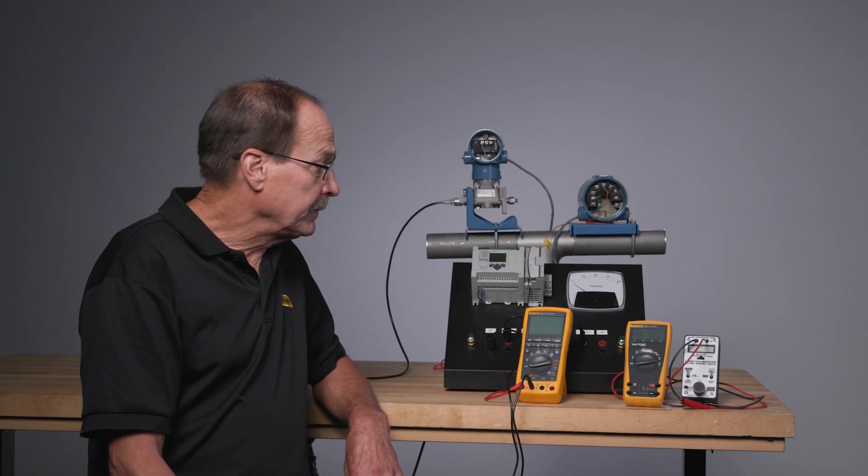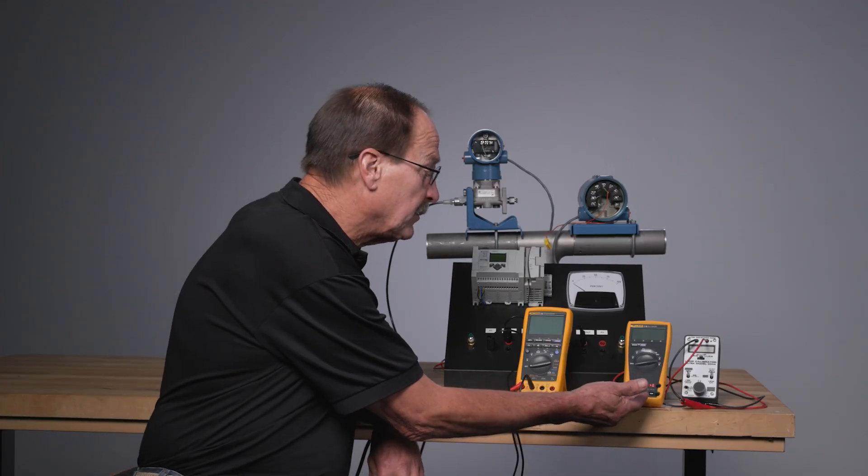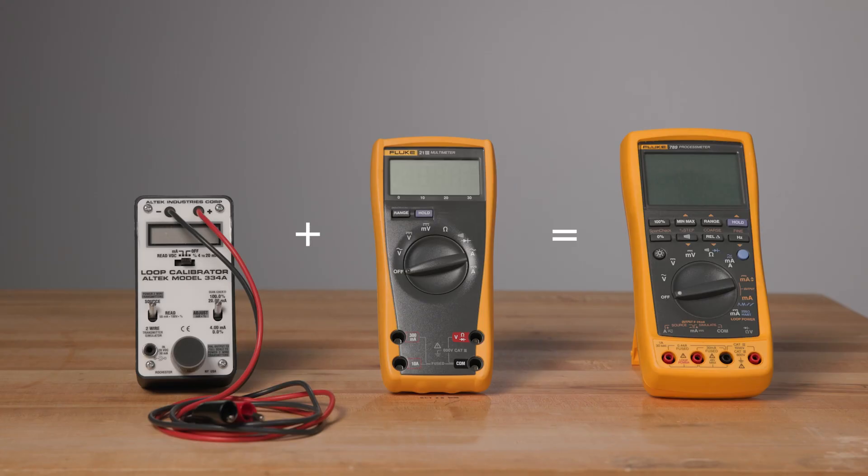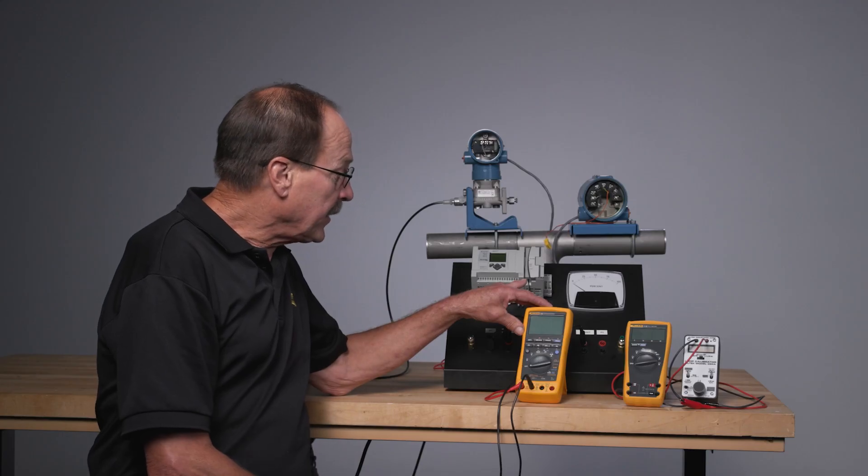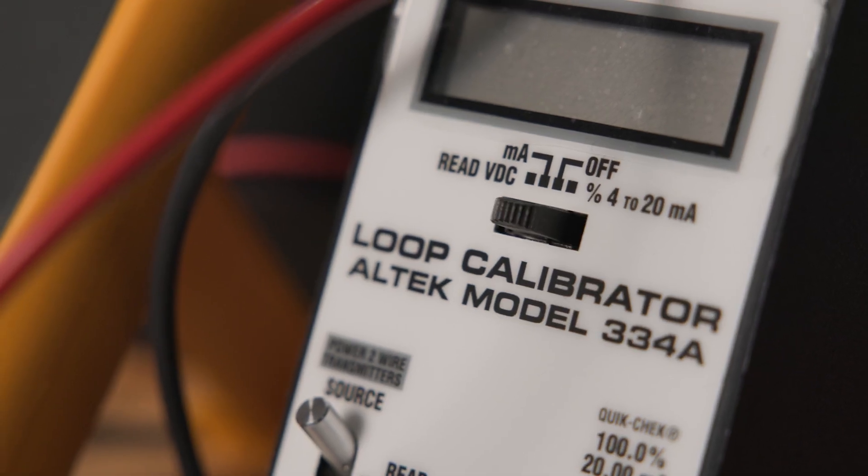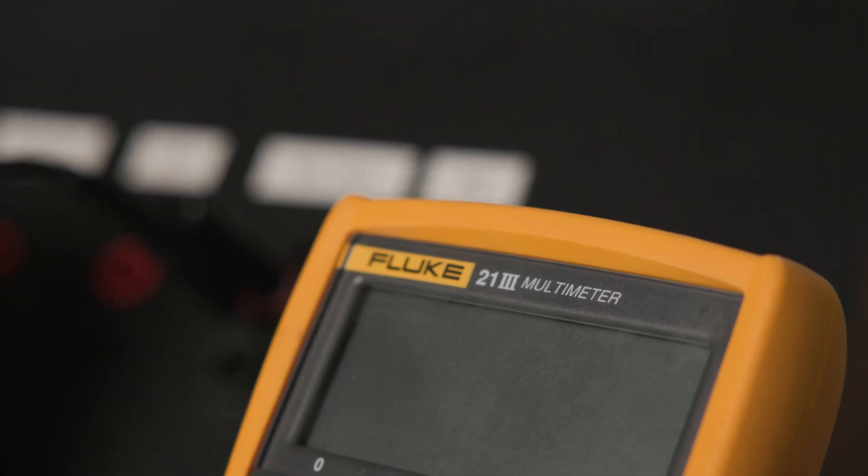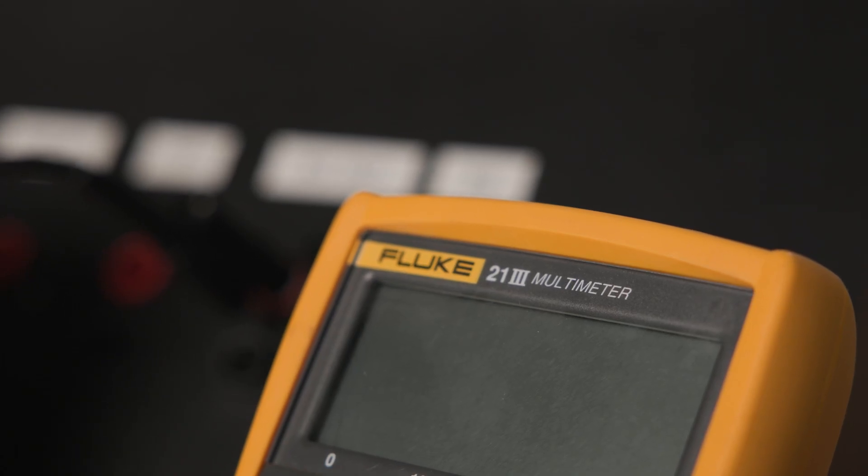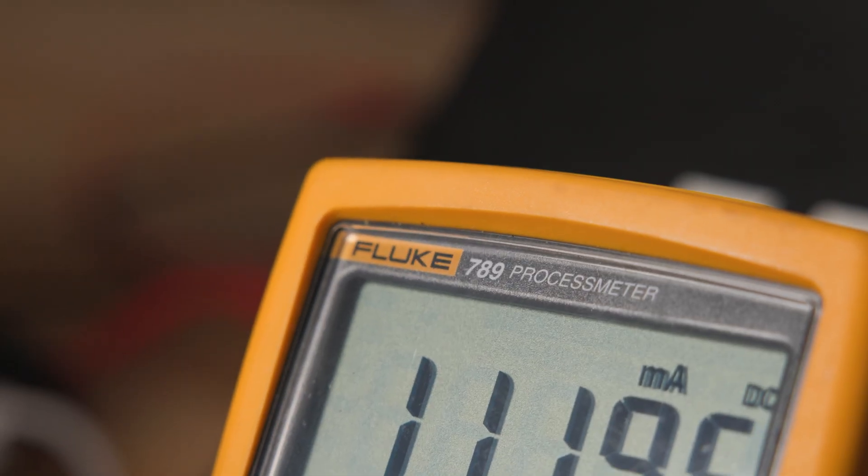The Process Meter is a marriage between a traditional multimeter and a loop calibrator in one compact professional tool. The 789 Process Meter not only has the milliamp capabilities built in for doing instrumentation work, but the electrical capabilities of a traditional multimeter for working on high energy circuits.